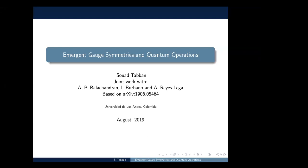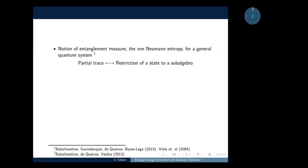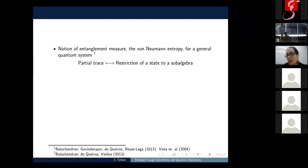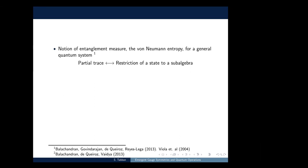The question we want to answer is how to associate a von Neumann entropy to an algebraic quantum state. Six years ago, Balachandra et al. addressed this question. They wanted to associate a notion of entanglement measure — the von Neumann entropy — for a general quantum system, in particular for a fermionic system where we have indistinguishable particles, where the usual notion of entanglement measure via the partial trace is not defined.